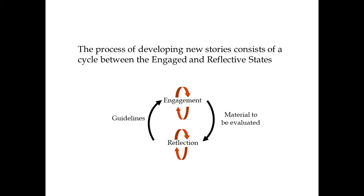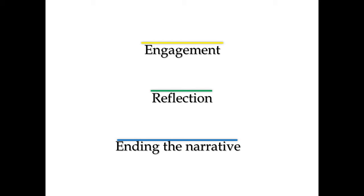The process of developing new stories consists of a cycle between the engaged and reflective states. During engagement, the system generates a sequence of actions. During reflection, the system evaluates the material produced so far. As a result of this evaluation, a set of variables called guidelines is created. The guidelines will constrain the production of material during the next engagement cycle. The chapter is divided into three sections: engagement, reflection, and ending the narrative.